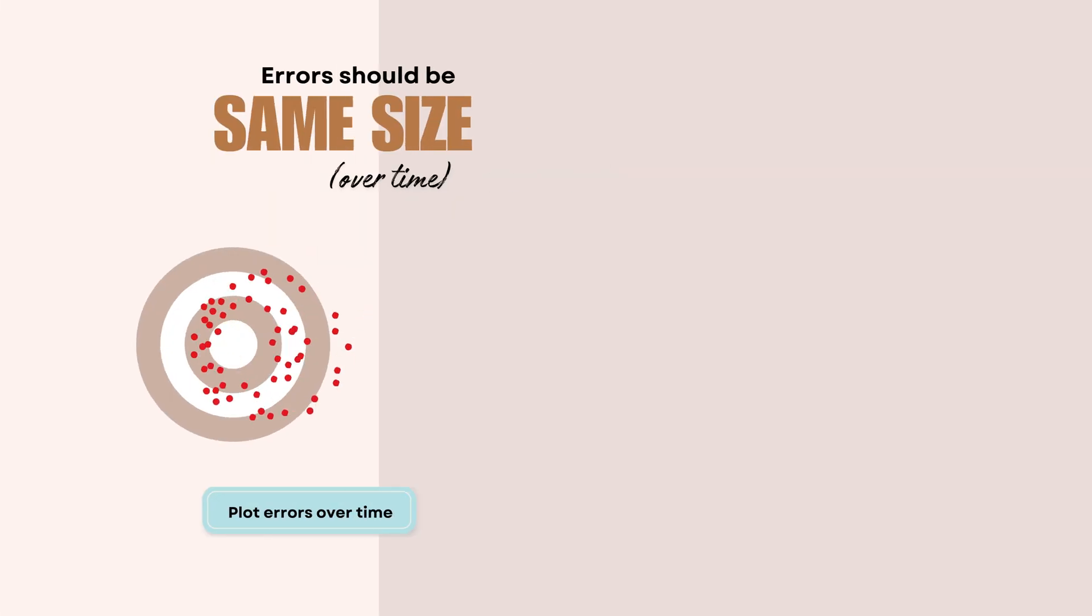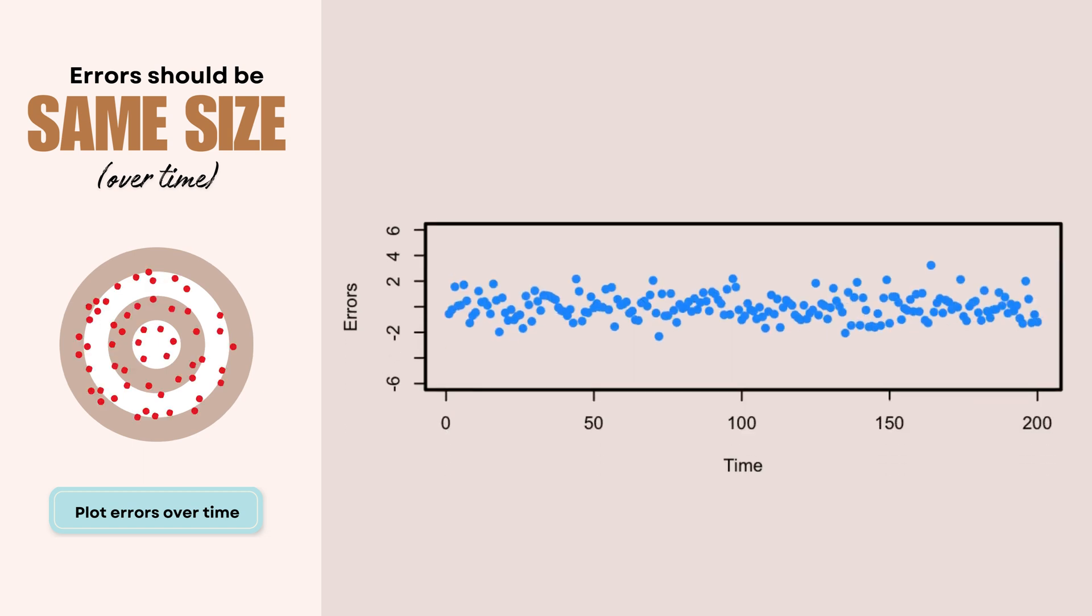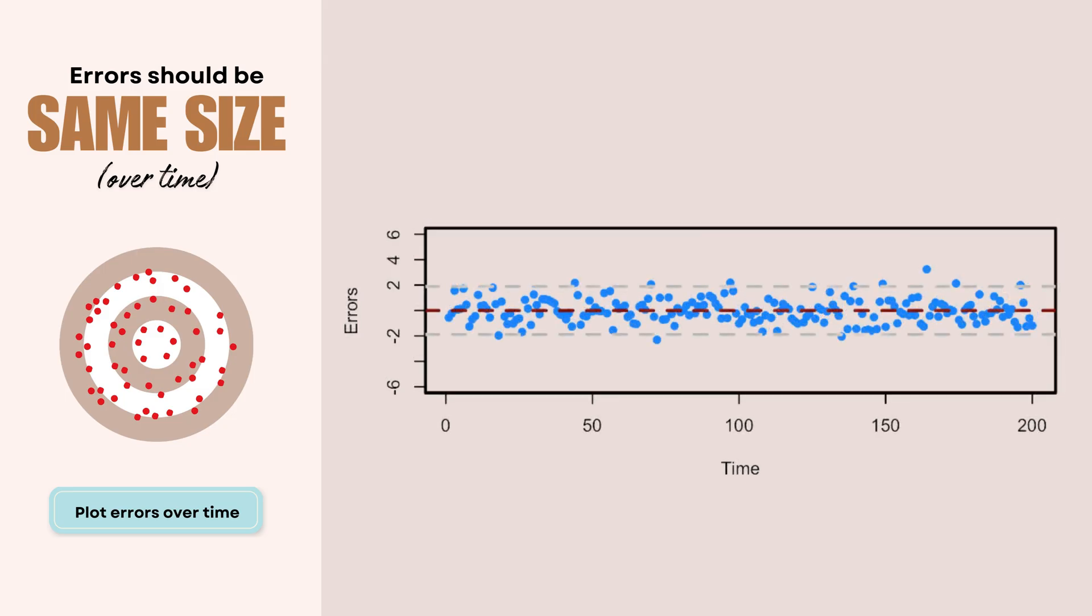And finally, we want to make sure that we have a consistent error size. So errors should be maintained in a similar magnitude over time. There should be no sudden increases in error size and no pattern of any growing errors. When we plot errors over time, we're looking at how their magnitude changes. The vertical axis shows error size and the horizontal axis shows time. What we want to see and what a good forecast should show is that errors should be bouncing randomly between consistent bounds. There should be no trends in error size and there should be no sudden changes in variability.